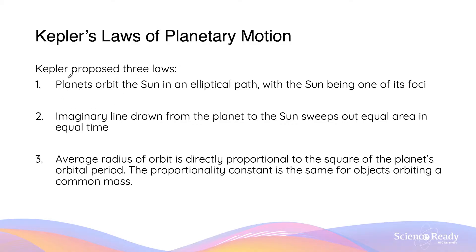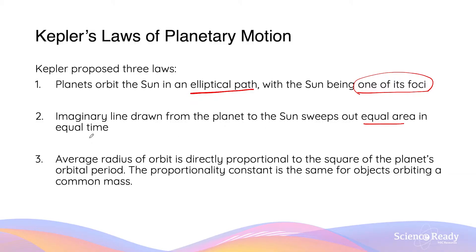The first law states that the planets which orbit the Sun do so in an elliptical path rather than a circular one. When planets orbit the Sun in an elliptical path, the position of the Sun occupies one of the foci of the ellipse. The second law states that an imaginary line drawn from the planet to the Sun will sweep out equal area in equal time. We'll have a look at the first and second law together in a moment.